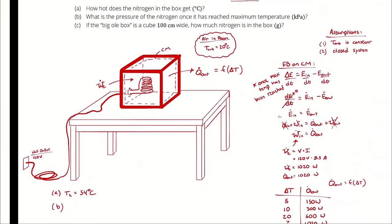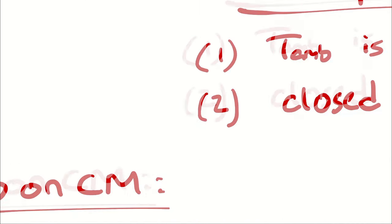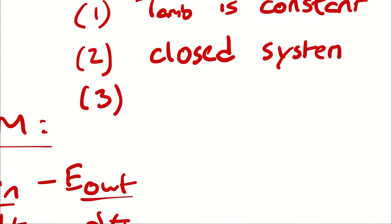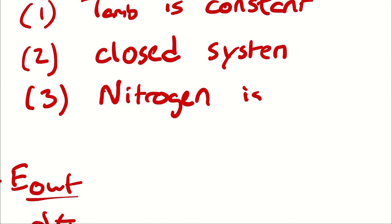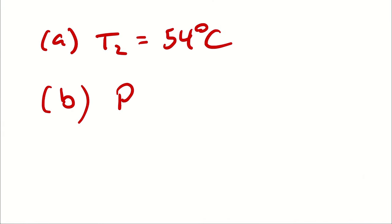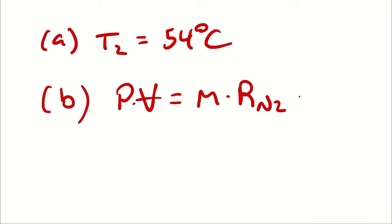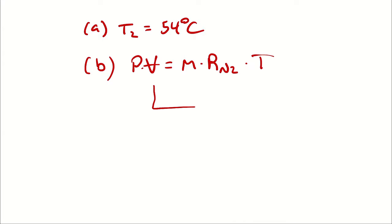Part B: I want to know what the pressure of the nitrogen is once it has reached maximum temperature. I'm going to treat the nitrogen as an ideal gas. If the nitrogen is ideal, I can write P times V equals mass times the specific gas constant of nitrogen times temperature. I also recognize that for this process, I have a rigid container, therefore the volume is constant.